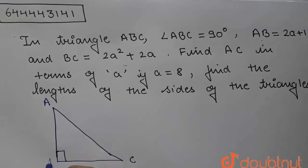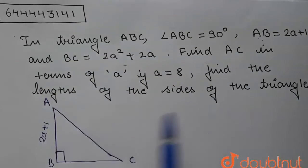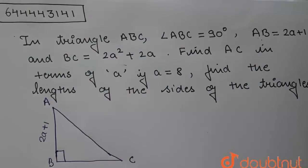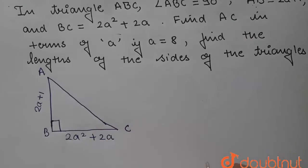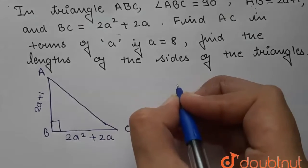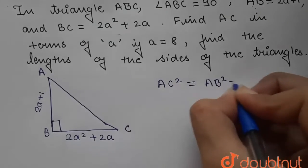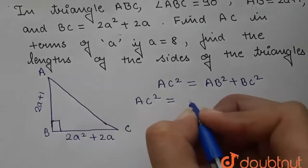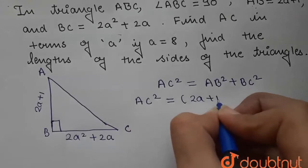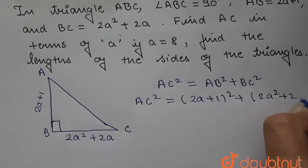This is A, this is C, and this is B. Now, we were given that AB is equal to 2a plus 1 and BC is equal to 2a squared plus 2a, and we have to find AC first in terms of a. So we know by Pythagoras theorem that AC squared is equal to AB squared plus BC squared.